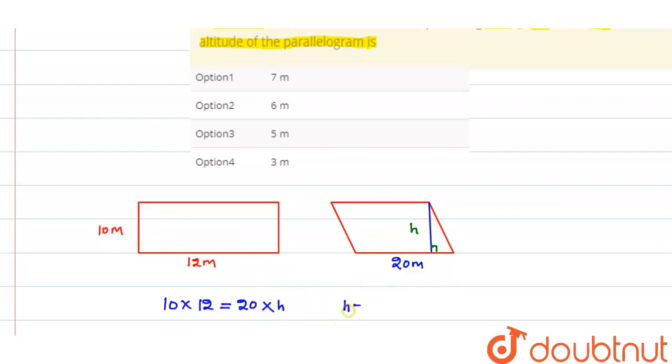So, H is equal to what? From here I can say, this will be cancelled out with 2 times. And again, this 12 will be cancelled out with 2 giving 6 times. So, H is equal to 6 meter. So, our correct option is option 2, 6 meter is our answer.